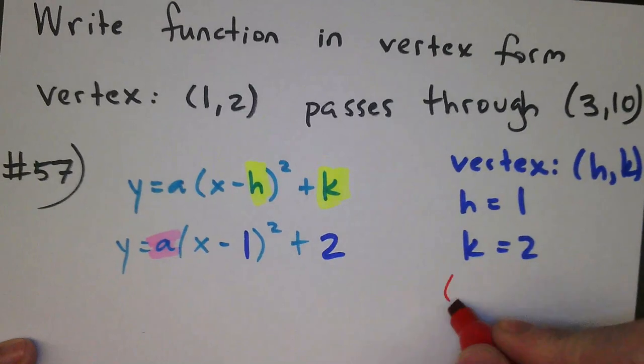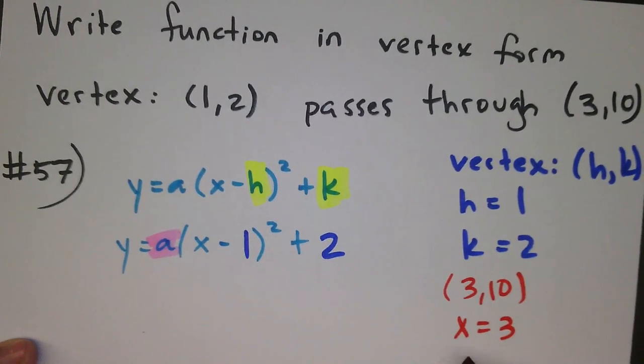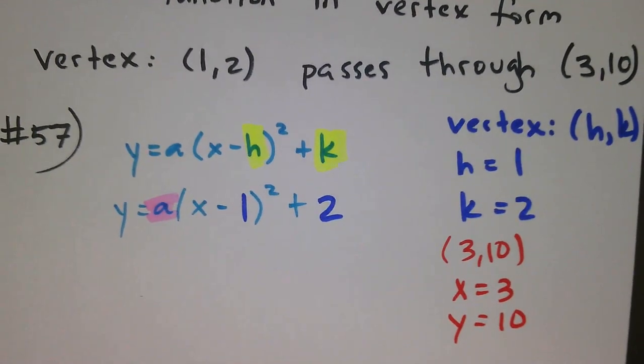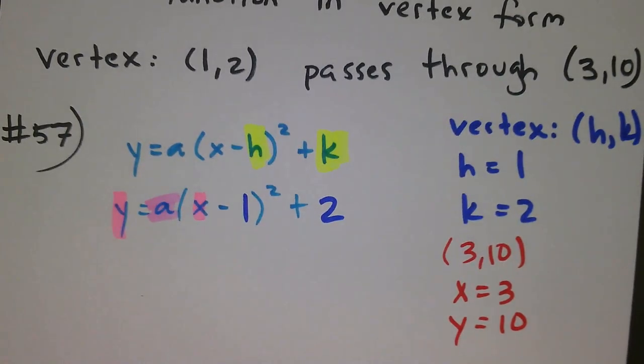So they have this point here, 3, 10. That's an x value of 3 and a y value of 10. And that means I can replace the x and the y with those numbers. So I can do the x value here and the y value here with 3 and 10.